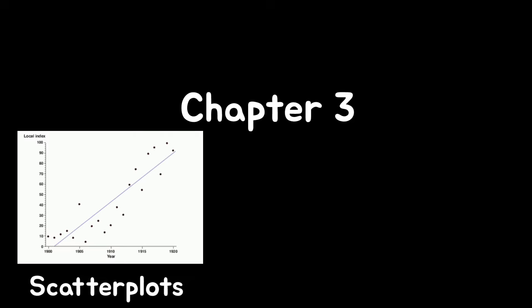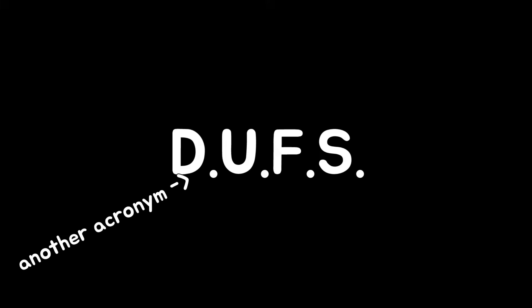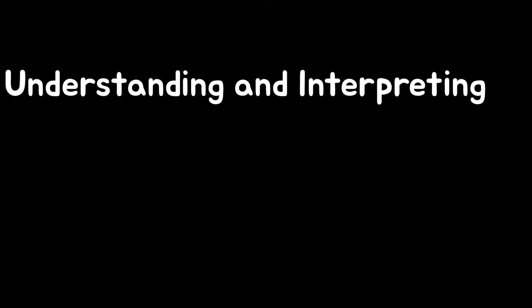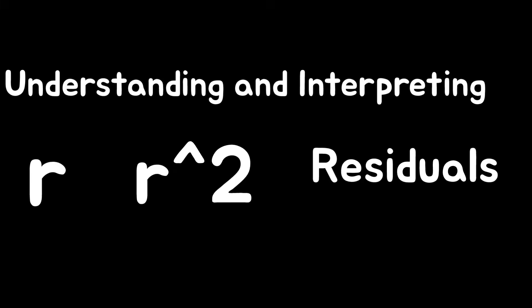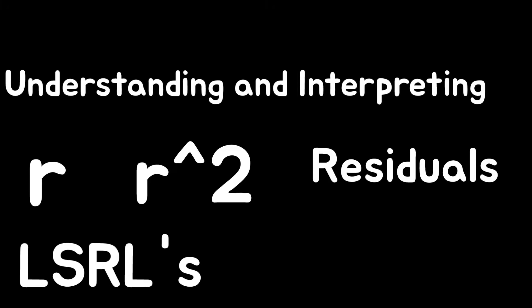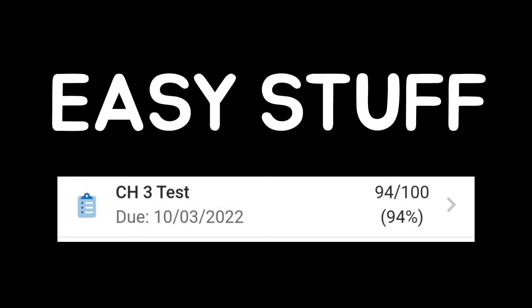Chapter three is all about scatter plots and correlation, where you meet DUBS, another acronym of high importance, as well as understanding and interpreting R, R-squared, residuals, and least-squares regression lines, and computer outputs. Easy stuff.